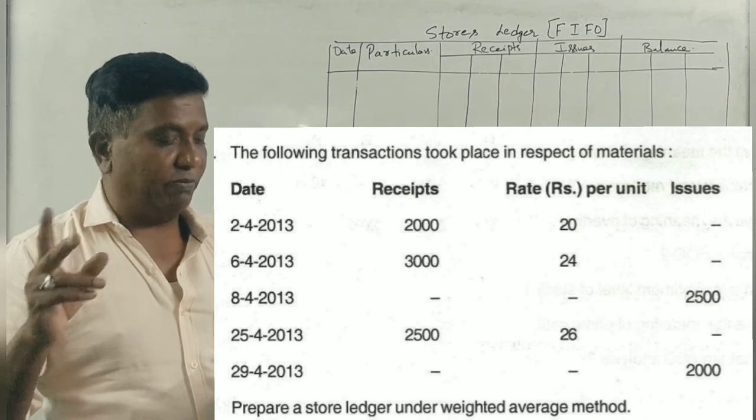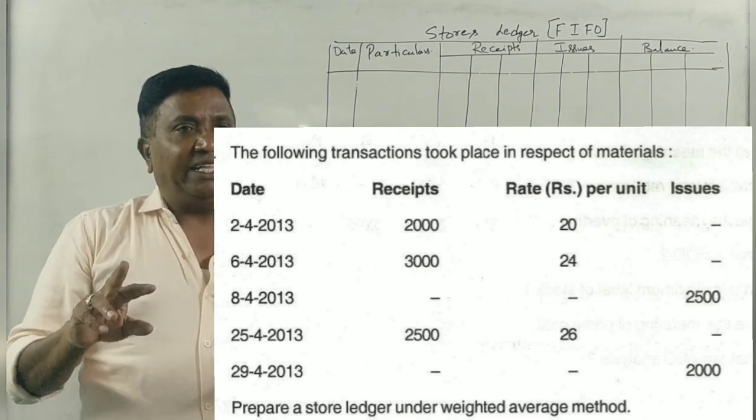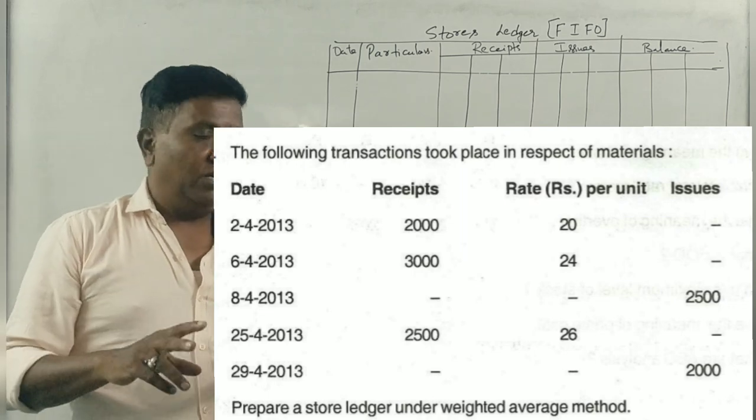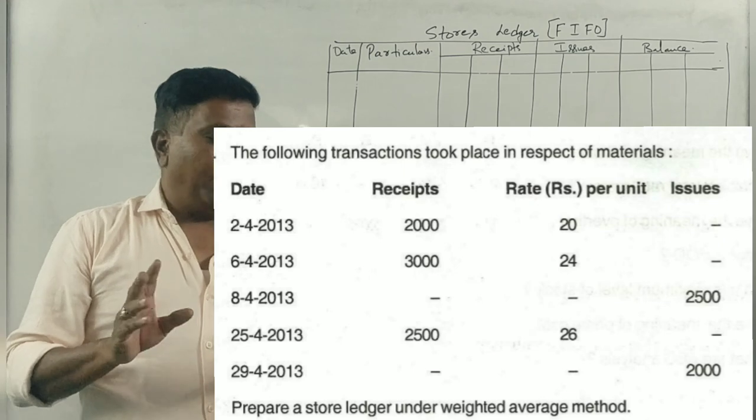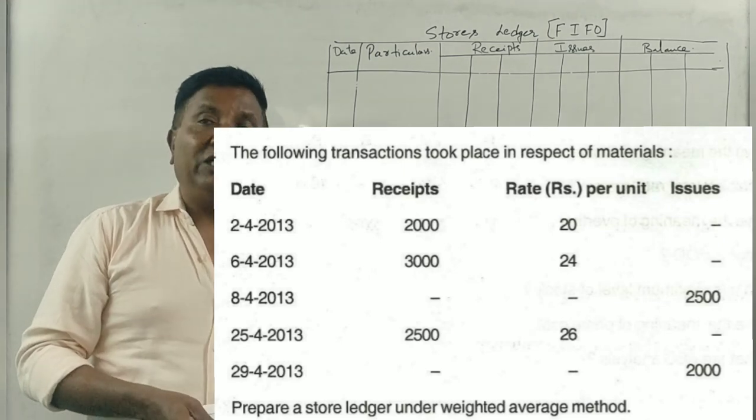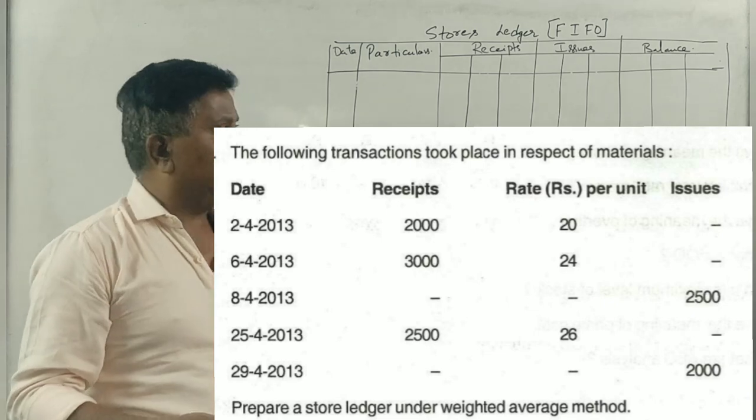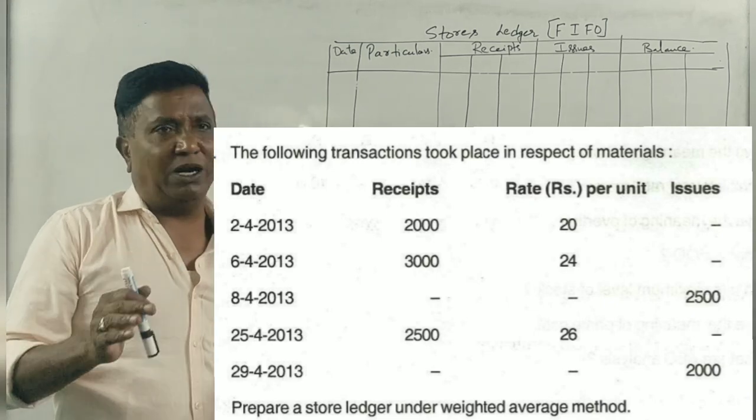Receipt, 6th receipt, 8th issue, 25th receipt, 29th issue. Prepare stores ledger account under FIFO method. What method? FIFO method. Okay, you have three methods, four methods are the same problem. Okay, this is FIFO method.